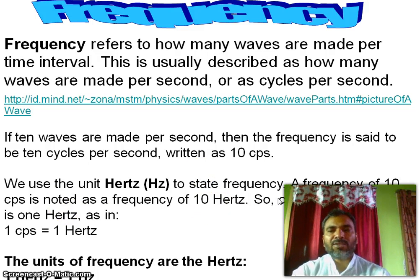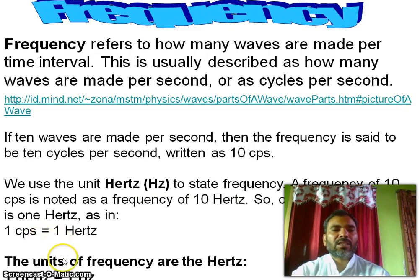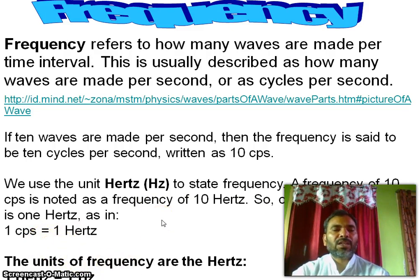A frequency of 10 cycles per second is noted as 10 hertz. One cycle per second equals 1 hertz. The unit of frequency is the hertz (Hz).